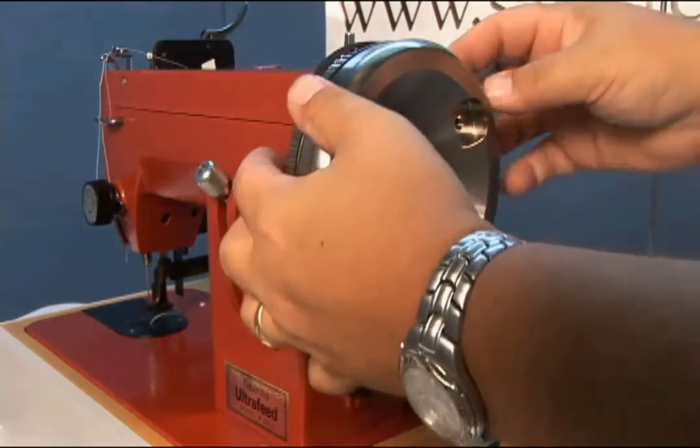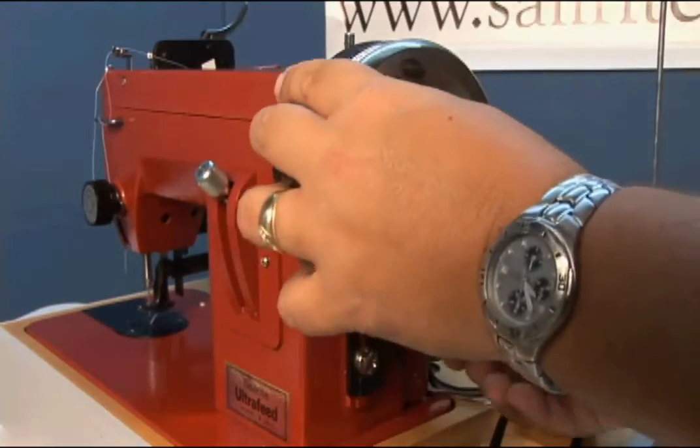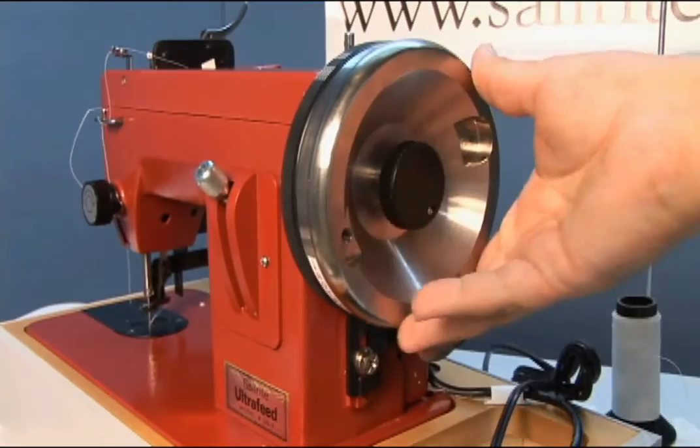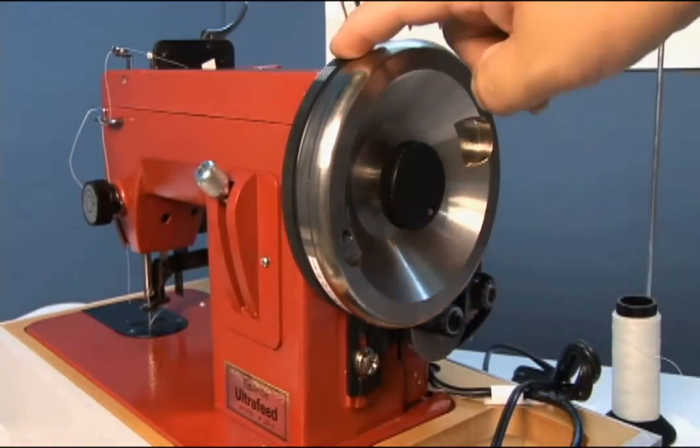Now we'll take our belt, we'll start at the bottom of the jack drive, and we'll walk it on as we would a bicycle chain. There we are. We started from the bottom and went to the top.